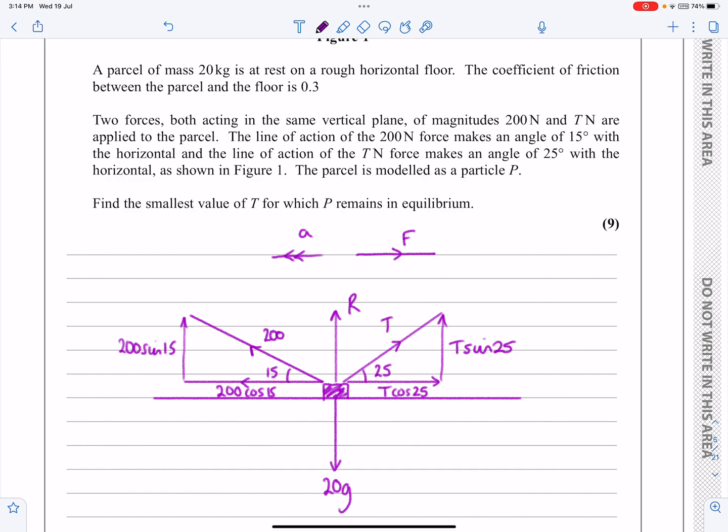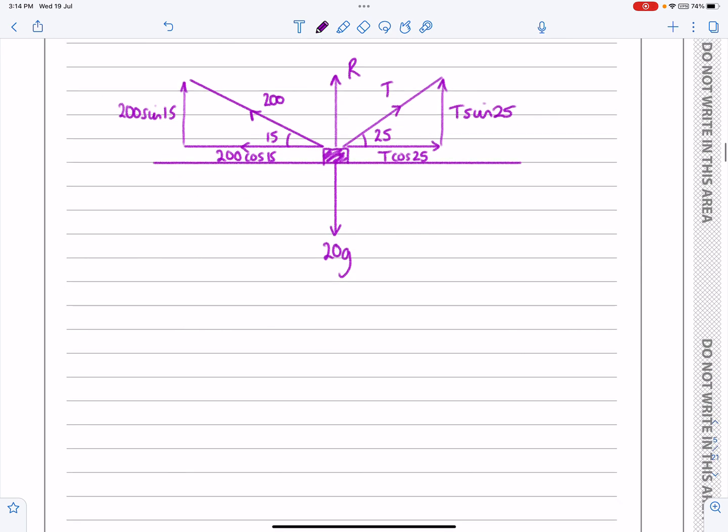Once I've got that, now all I'm going to do, first of all I'm going to explain it to the examiner so that he understands what I mean by my diagram, but then I'll just resolve horizontally and resolve vertically. I'll put my F equals mu R in and I should get some sort of equation I can solve. It won't be particularly easy, but let's at least get started with that. So we need to say, just an explanation of what we've just done,